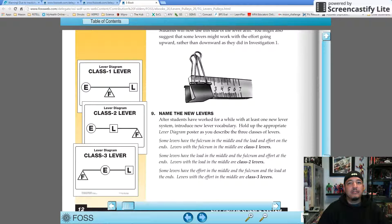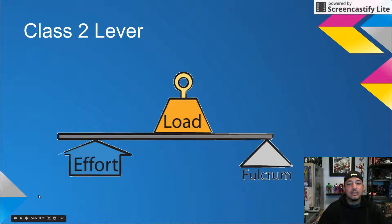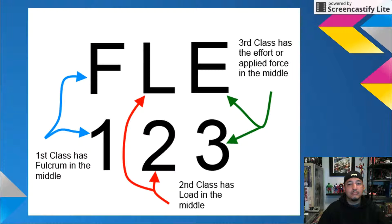Use the mnemonic FLEA123 to help students memorize the basic arrangements. Just remember that class one lever has the fulcrum in the middle, class two lever has the load in the middle, and class three lever has the effort in the middle. And again, use the mnemonic FLEA123 as a way to help kids remember the different lever classes.